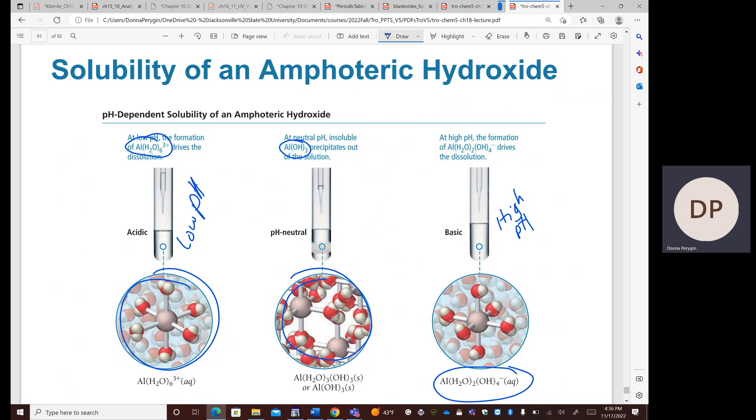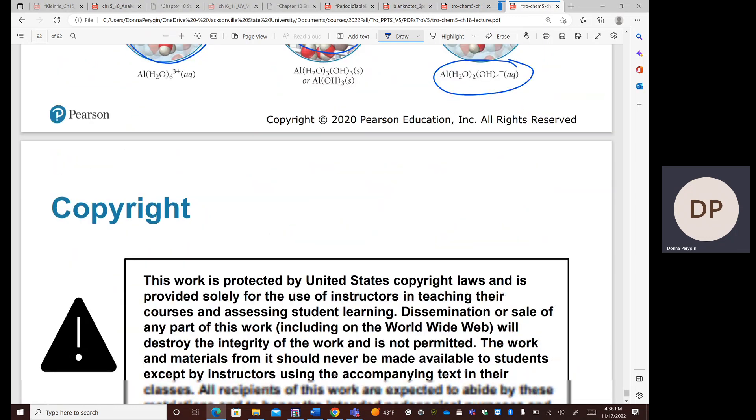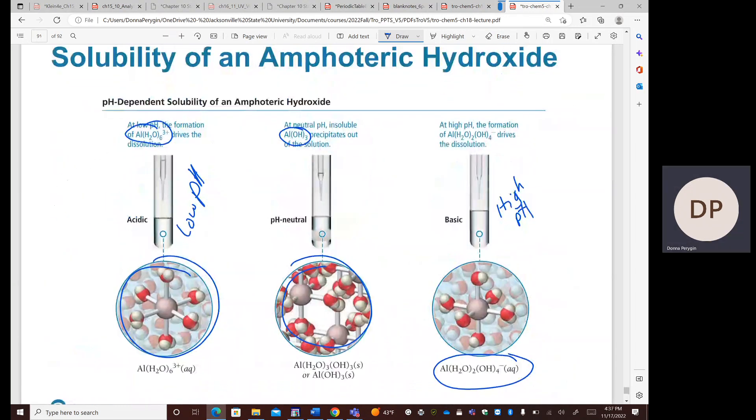So at low pH, it's more soluble. At high pH, it's more soluble. But in neutral pH, it precipitates. Let's go ahead and work some problems with these concepts.